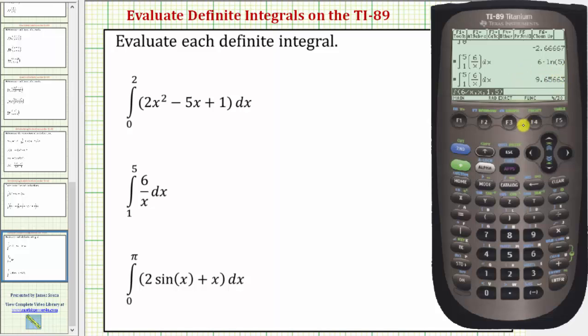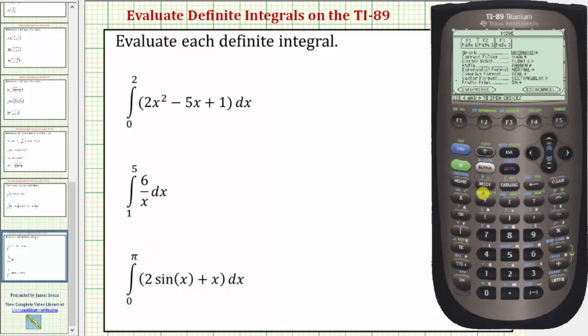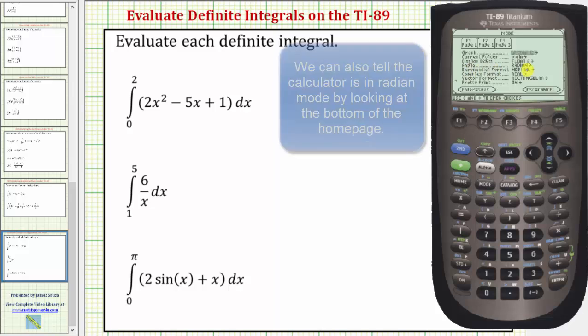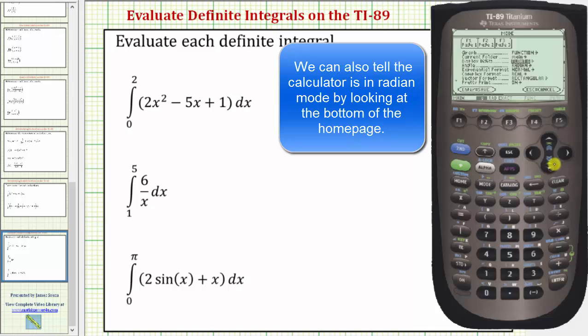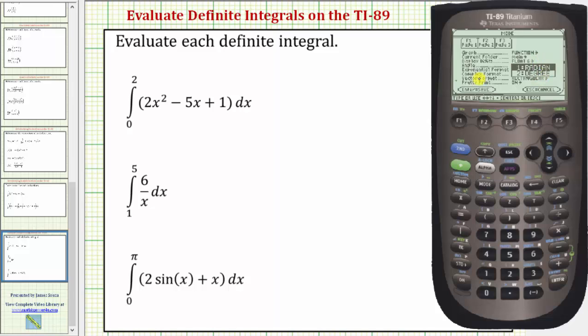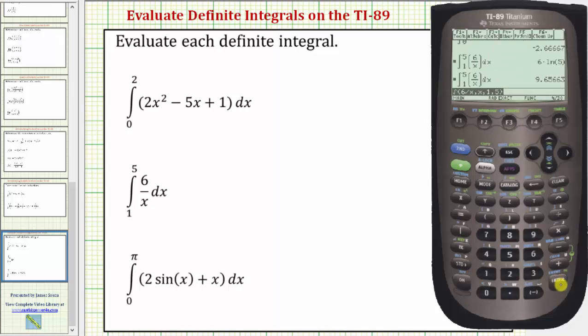Looking at our last example, notice how the upper limit of integration is pi. So you need to make sure that our calculator is in radian mode. So let's press the mode key. And notice how under angle, the calculator is in radian mode. If we arrow down to radian and then press the right arrow, notice how we have an option of radian or degree. If it was not in radian mode, we'd highlight radian, press enter, and then enter again.